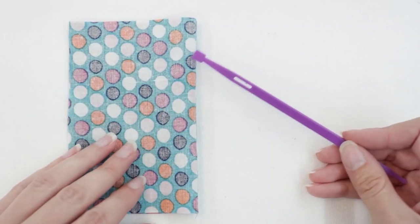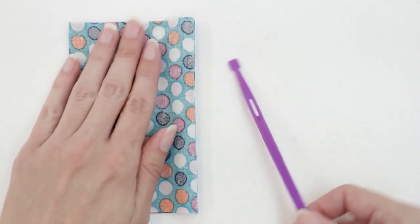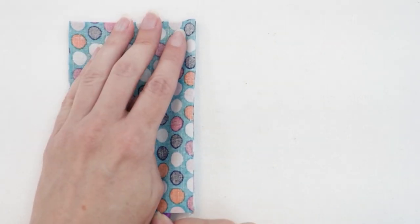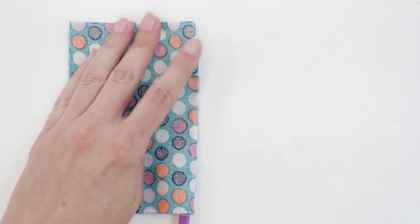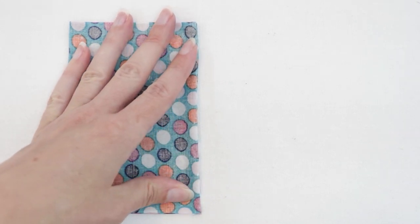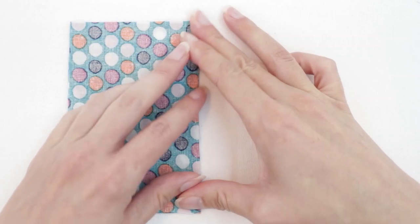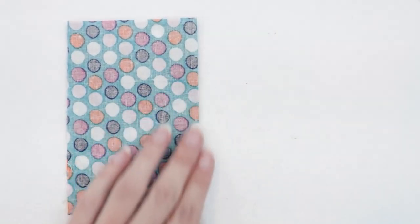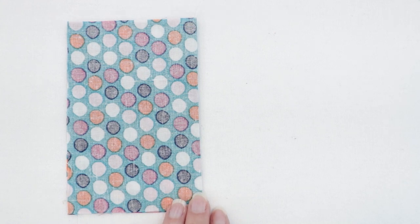To help you, you can use a turning tool and run it along the edge to make sure it's all the way turned out. I'm going to take my purple thing, slide it in there along the edge, make sure it's fully turned out, and then press it flat. I'm going to make sure to press this well so it's nice and crisp.